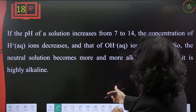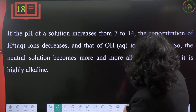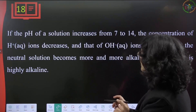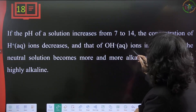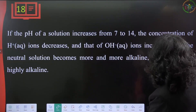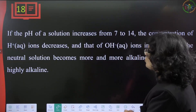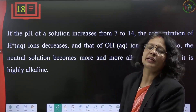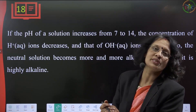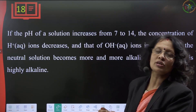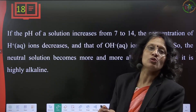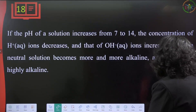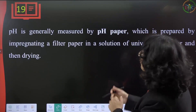If the pH increases from 7 to 14, the concentration of H⁺ ions decreases while OH⁻ ion concentration increases, making the solution more alkaline. Strong bases like sodium hydroxide and potassium hydroxide have a pH of almost 13–14.